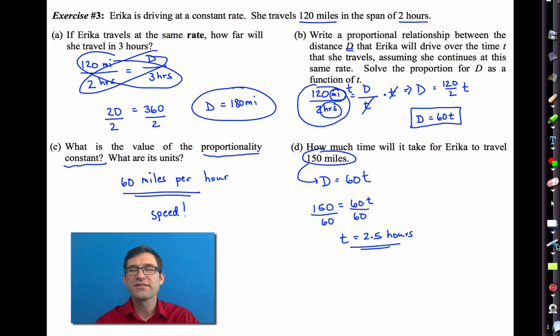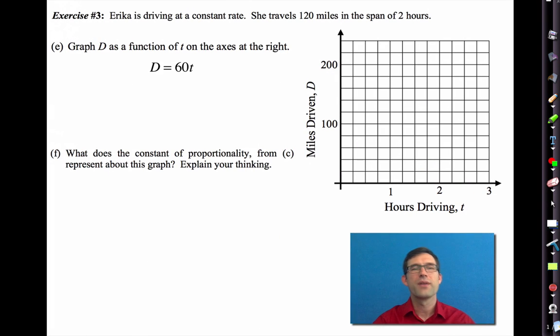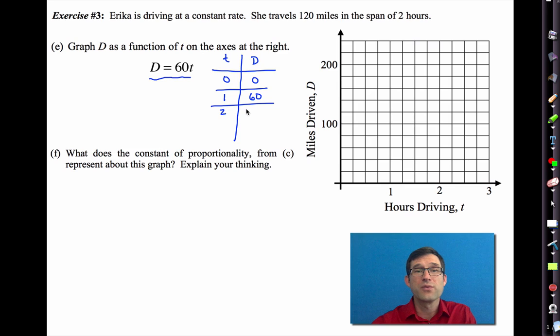I'm going to clear out the text. So pause the video if you need to. Let's graph D as a function of T on the axis to the right. And I wrote down our equation again. D equals 60T. Again, we could create kind of a little table of values here. And that might help. Should be straightforward. If I haven't been driving at all, we haven't gone any miles. After one hour, we've gone 60 miles. After two hours, we've gone 120 miles. And after three hours, we've gone 180 miles. So simple enough.